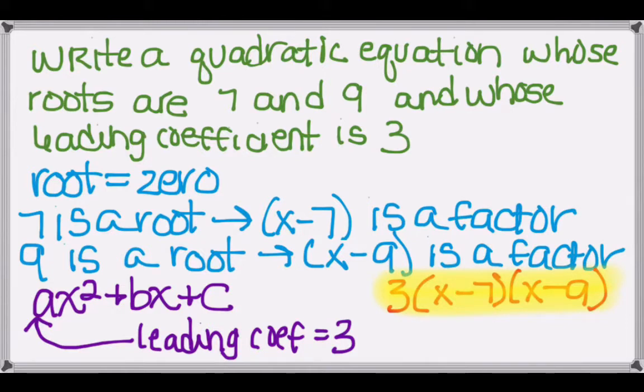So we know that this is a quadratic equation. It will have the roots of 7 and 9 if we were to set it equal to 0, and once we multiply it all through, the leading coefficient, or the a value, would be 3.